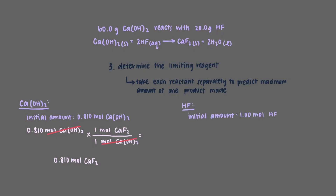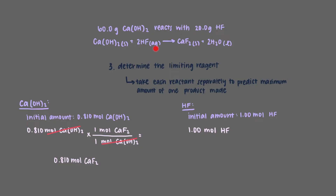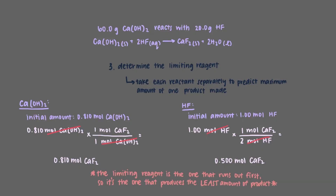Now let's do the same step for hydrogen fluoride. Assuming we had an infinite amount of calcium hydroxide, how many moles of calcium fluoride can form from 1 mole of hydrogen fluoride? Two moles of hydrogen fluoride are required to make one mole of calcium fluoride. When we use this relationship as the conversion factor, we get that 0.500 moles of calcium fluoride forms from 1 mole of hydrogen fluoride. Therefore, hydrogen fluoride is the limiting reagent because it produces the least amount of product.